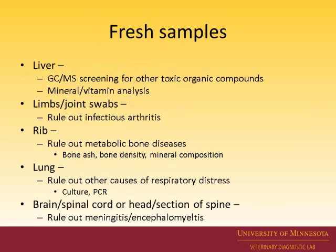Fresh samples are for ruling out pertinent differential diagnoses, since clinically it may not be a slam dunk. Grab everything so you get the answer the first time — if it isn't ionophore toxicity, you'll have sent sufficient samples to get another answer. Liver analysis looks for other toxic organic compounds and checks mineral and vitamin levels to rule out metabolic bone disease or nutritional myopathy. You can send limbs or joint swabs to check for arthritis as a potential cause of lameness, and a rib can indicate metabolic bone disease by assessing density or mineral composition.